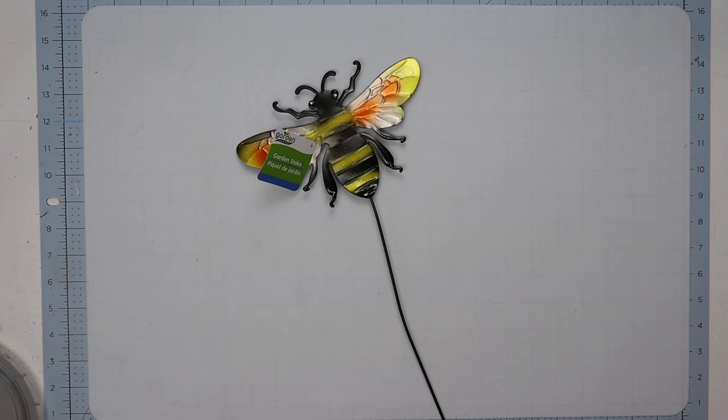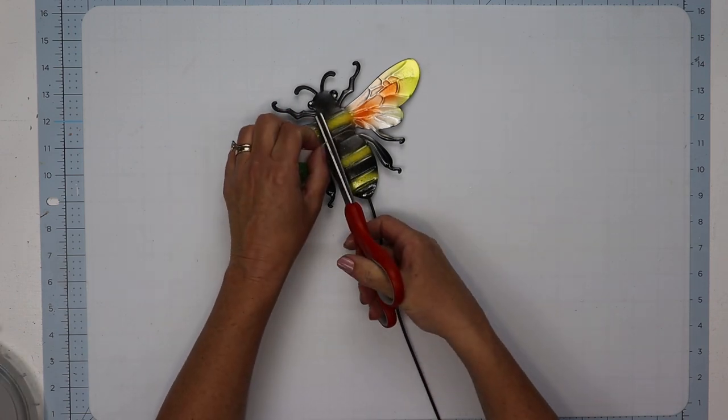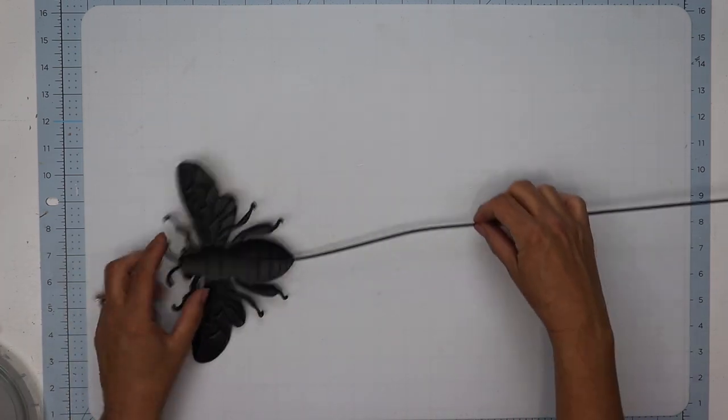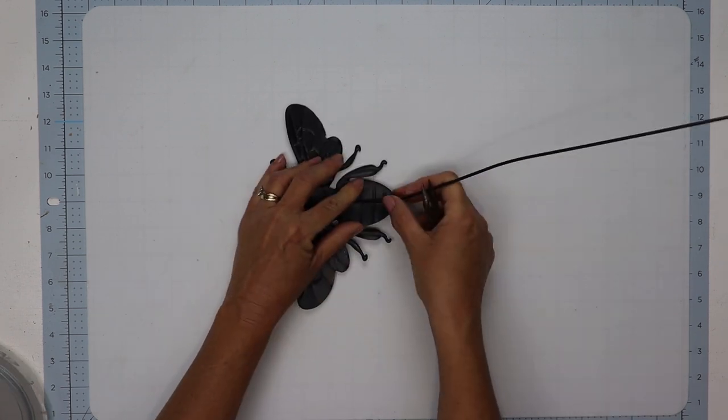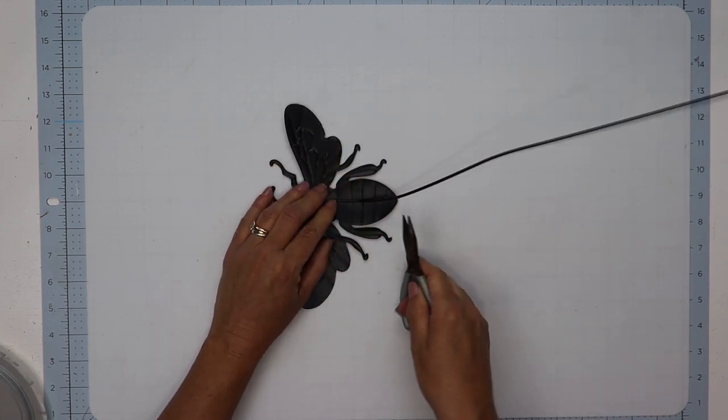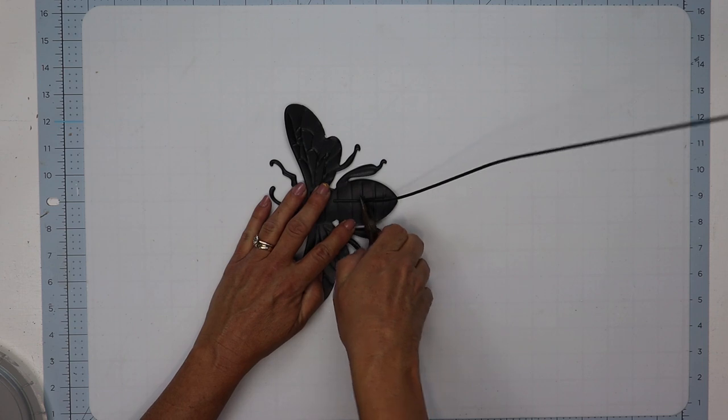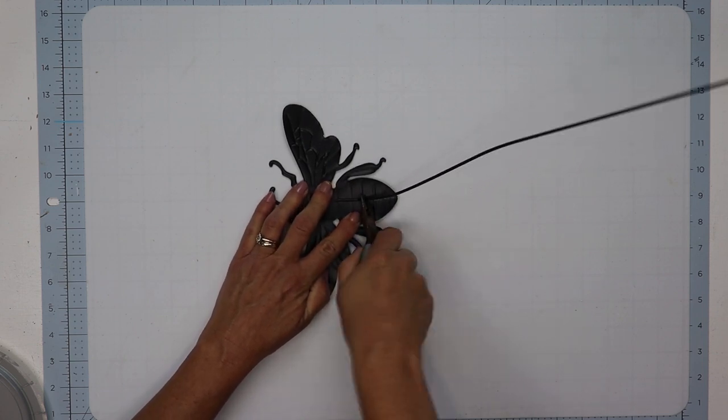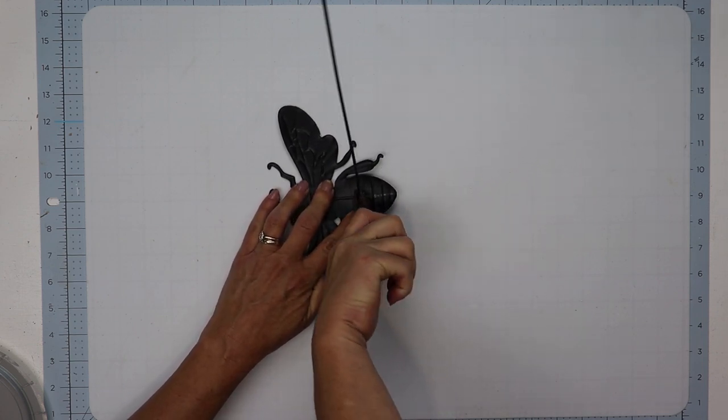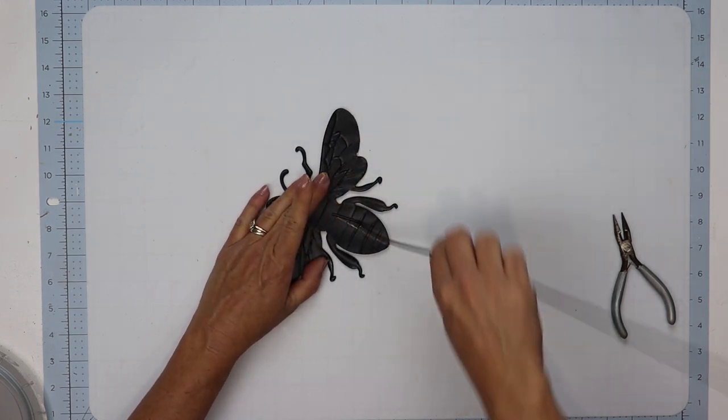But while that's drying, I'm going to use one of these metal garden stakes from Dollar Tree, and the stake itself is pretty easy to remove. I had my pliers, but you really don't need that. If you hold the bottom of the bead down and just wiggle that stake back and forth, it will pop off really easily.